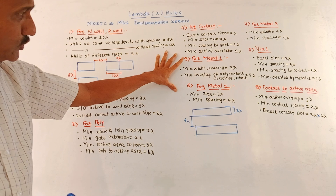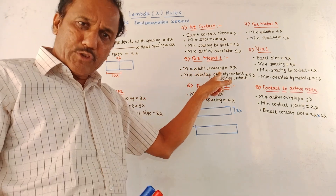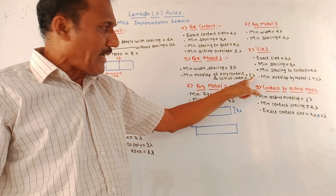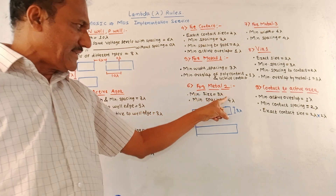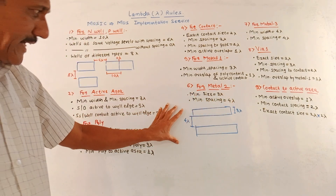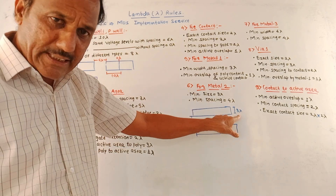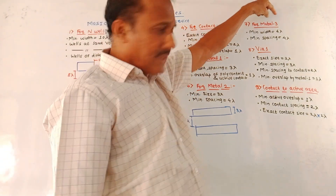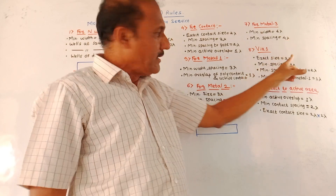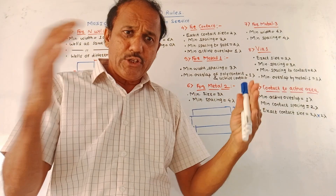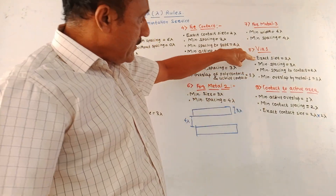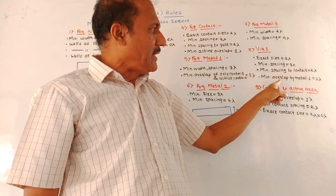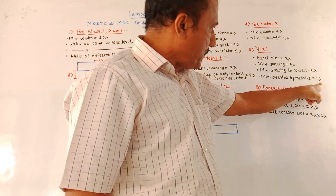For metal 1, minimum width as well as minimum spacing is 3 lambda. Minimum overlap of polysilicon contact and active contact is 1 lambda. For metal 2, minimum size is 3 lambda and minimum spacing is 4 lambda, as shown in the diagram. For metal 3, minimum width is 6 lambda and minimum spacing is 4 lambda. For via 1, exact size is 2 lambda, minimum spacing 3 lambda, minimum spacing to contact is 2 lambda, and minimum overlap by metal 1 is 1 lambda.